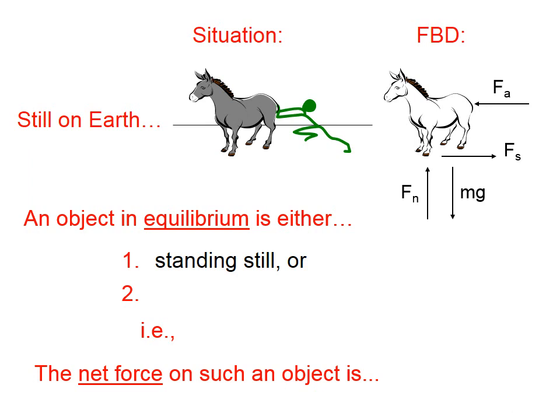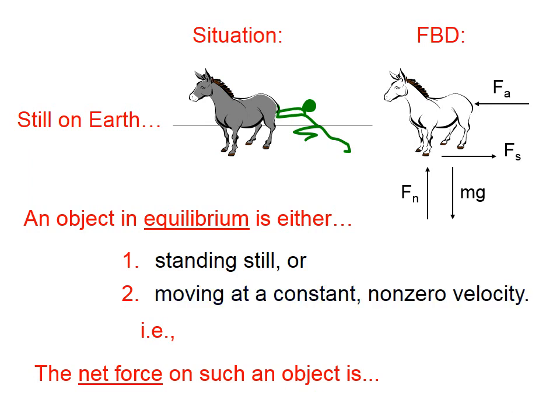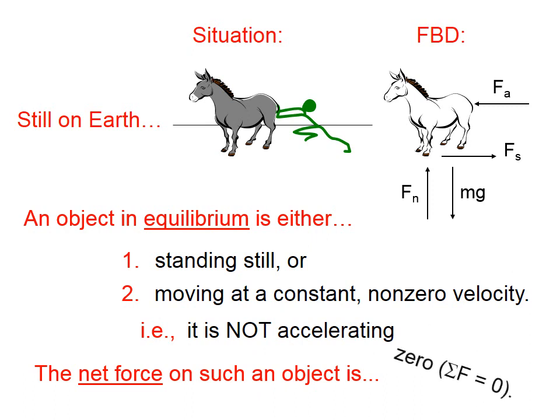An object in equilibrium is either standing still or is moving at a constant non-zero velocity. In other words, an object in equilibrium is not accelerating, and the net force on such an object is zero. That's what we mean by an object in equilibrium. If it's standing still, it's going to keep standing still; or if it's moving at a constant non-zero velocity, its velocity will not change — it won't speed up, it won't slow down, it won't change direction. In short, it's not accelerating.